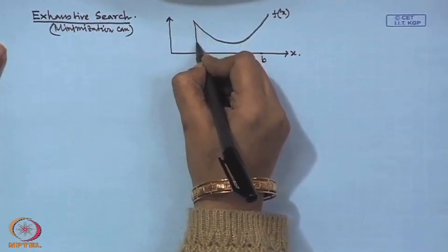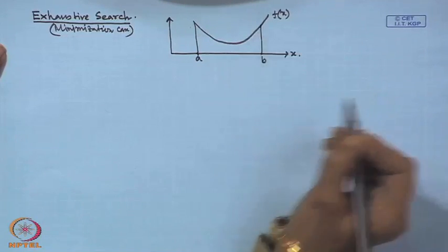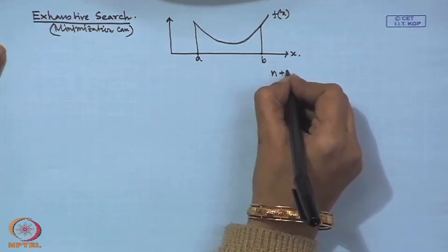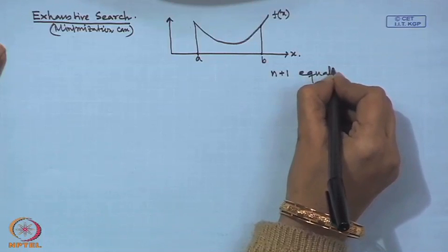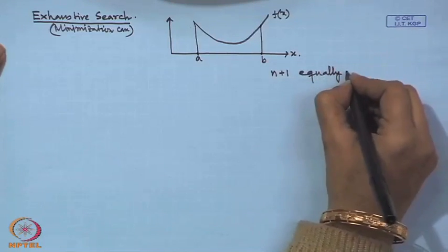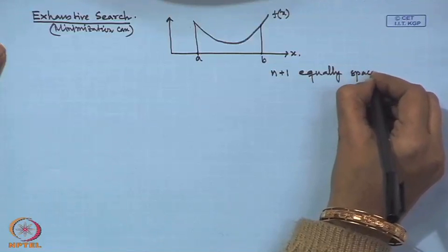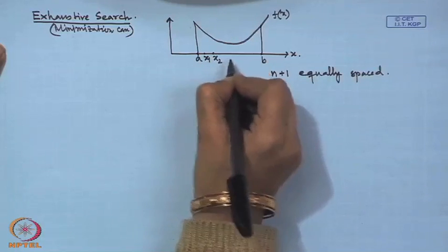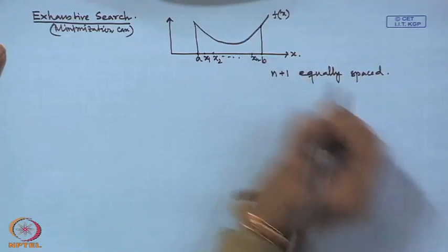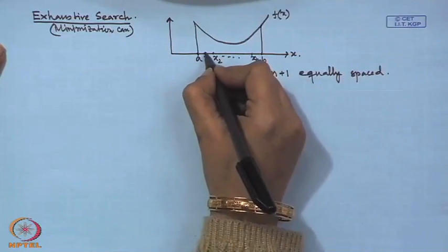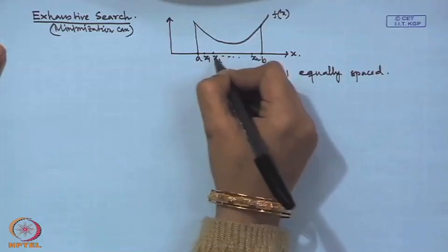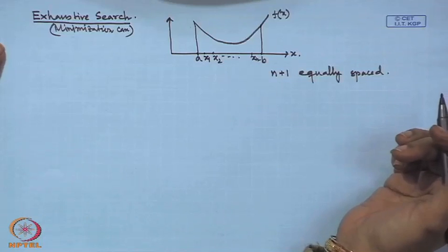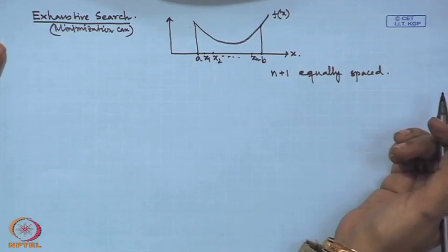The exhaustive search technique tells us that we subdivide the whole interval into n+1 equally spaced sub-intervals, where n is predetermined. We identify points x₁, x₂, ..., xₙ. We find the functional value at each point and observe how these values are distributed, then select the minimum value among them.